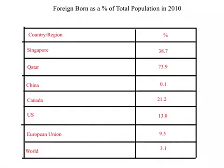Let us look at the numbers relating to international labor migration. We'll look at this table, which gives you the percentage of foreign-born people out of total population in 2010. The world total is 3.1%, meaning 3% of the world population lives outside the country where they were born. With a world population of 7 billion in 2010, that means about 210 million people could be considered migrants.